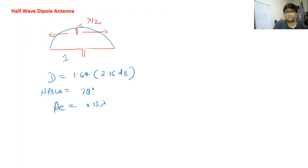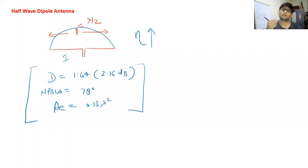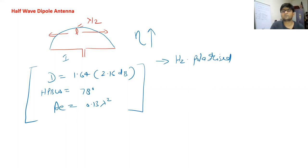For the half wave dipole antenna: the directivity is 1.64, or 2.16 dB. The half power beam width is 78 degrees, and the effective aperture area is 0.13 times lambda squared. These antennas are very popular due to their high radiation efficiency - very low losses - because of good matching between the feeding of the signal and the radiation from the antenna.